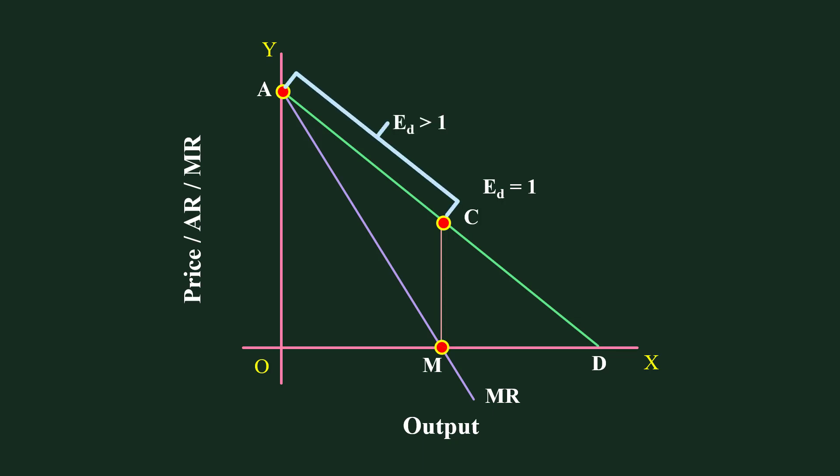Second: To the left of point C — that is in the segment CA — Elasticity is greater than 1. Looking at the Marginal Revenue Curve corresponding to this segment, Marginal Revenue is positive. So it should also be understood that so long as Marginal Revenue is positive, Demand is relatively elastic.